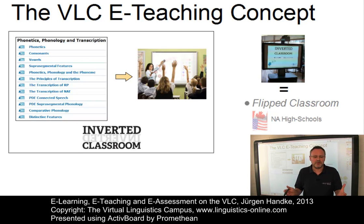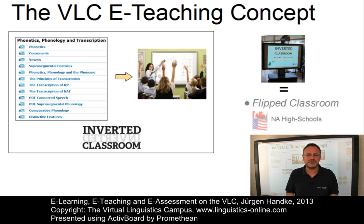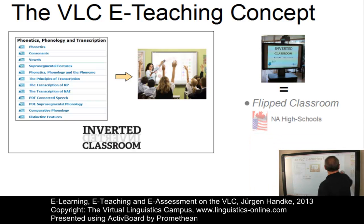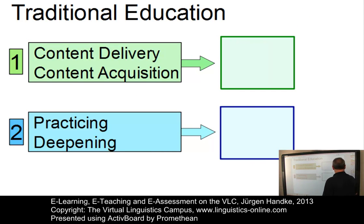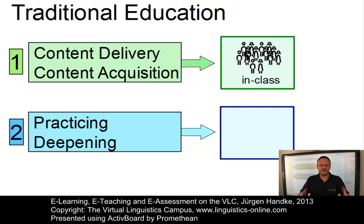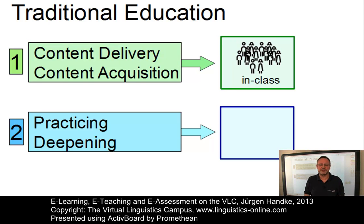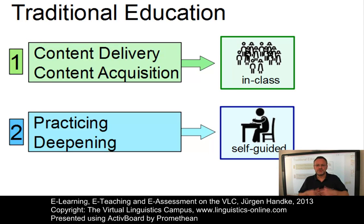But how does this model really work? To understand it, let us first look at traditional teaching. In traditional teaching, content delivery and content acquisition are realized in class, where several dozens of students have to gather at the same time to be entertained by their teacher. In a second phase, students practice on their own on the basis of additional exercise material, homework tasks, etc.